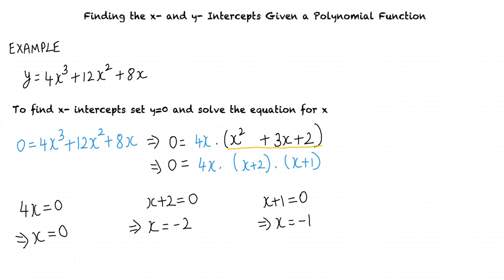We have three values for x-intercepts. What does that mean? This means that the function cuts the x-axis at three points, namely (0, 0), (-2, 0), and (-1, 0).